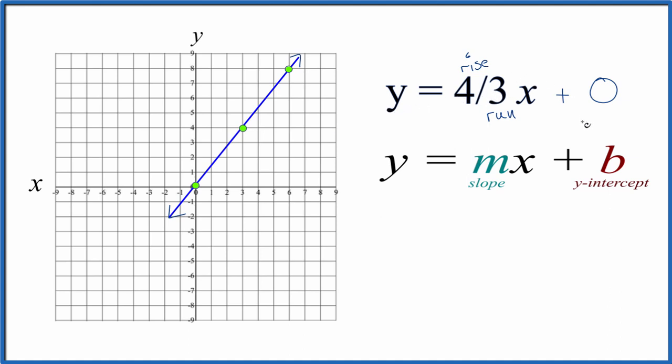And again, you could use a table of values, you'd get the exact same graph, just this is a lot quicker here. And especially when we have these fractions here, slope-intercept form is very much easier to use.